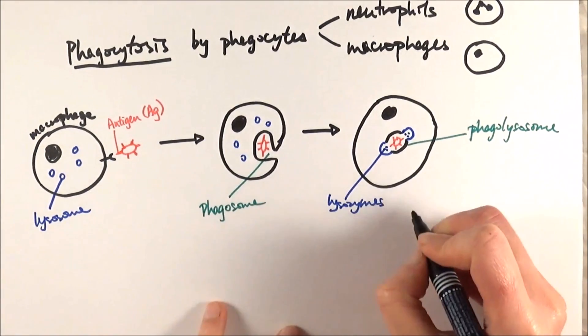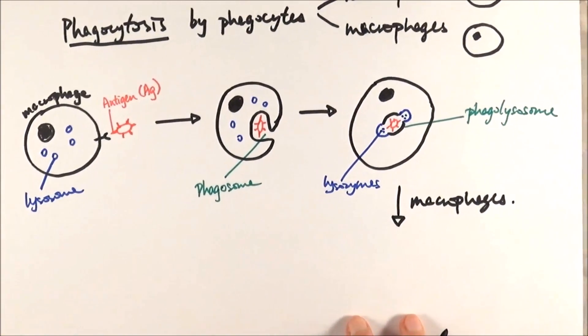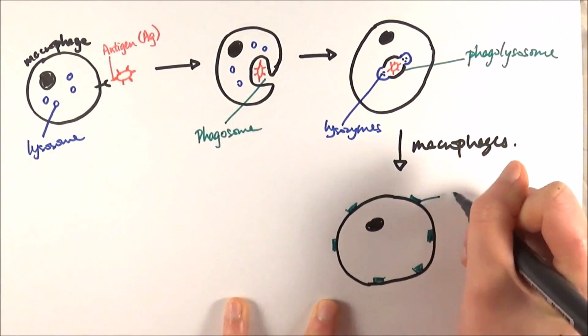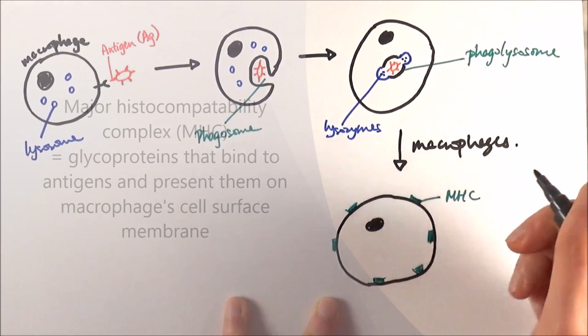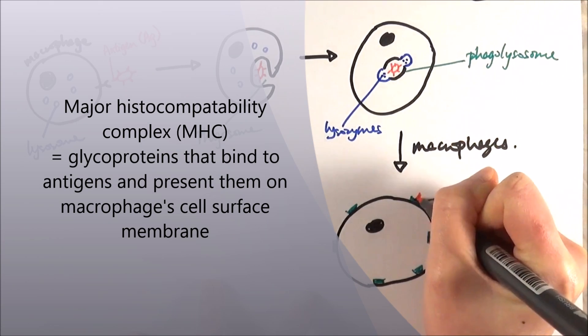But for the macrophages, we go on to a next further step. They will digest everything of the pathogen, except for the antigens on the surface. So they will have the MHC, Major Histocompatibility Complex, which is bound to the antigens from the pathogen.